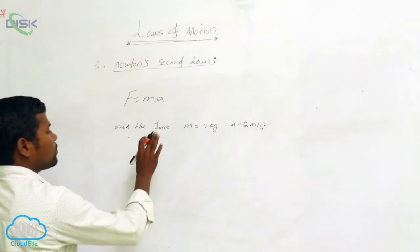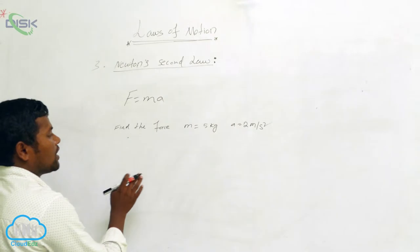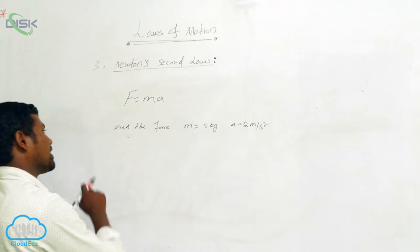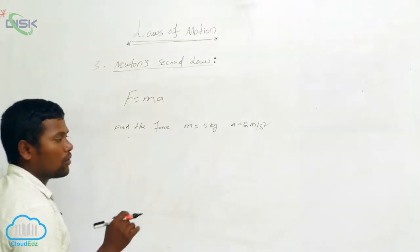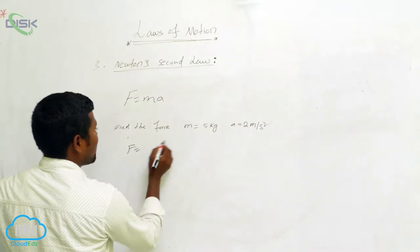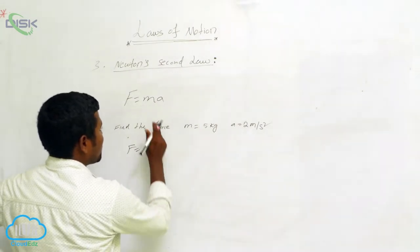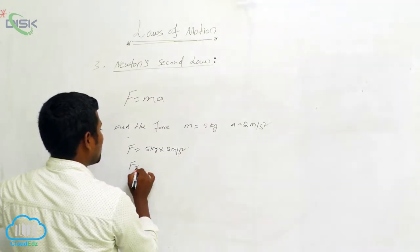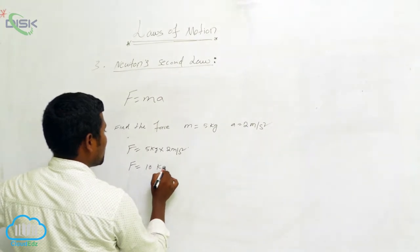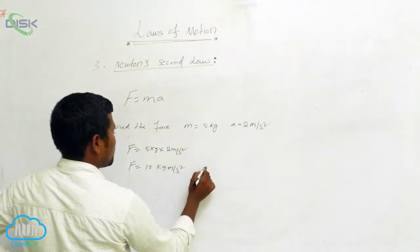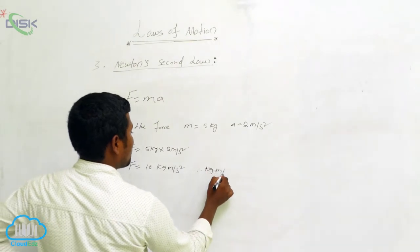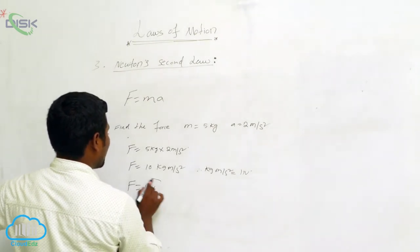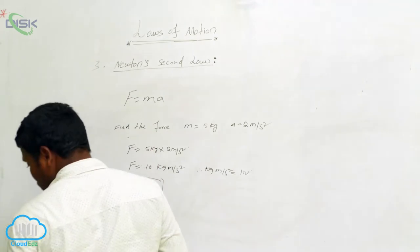A particle is moving with acceleration 2 m/s² and has mass 5 kg. What is the force? F = m × a = 5 kg × 2 m/s² = 10 kg·m/s². Since 1 kg·m/s² equals 1 Newton, the force is 10 Newtons acting on that object.